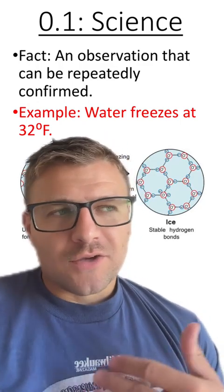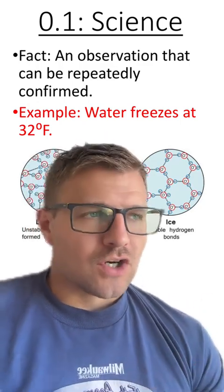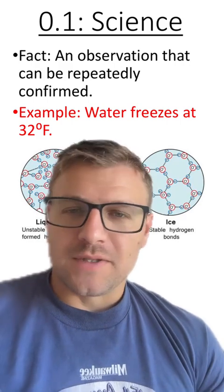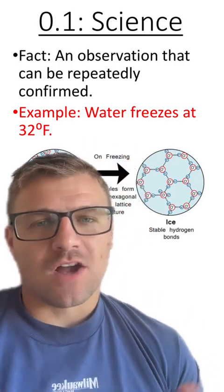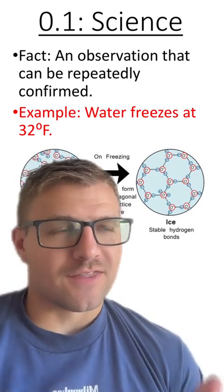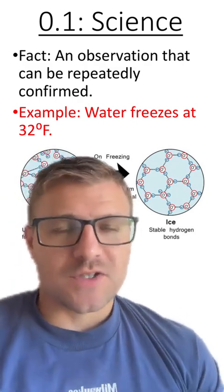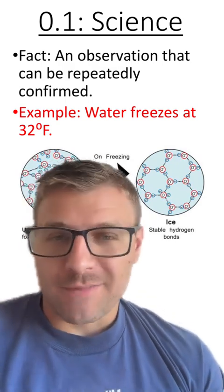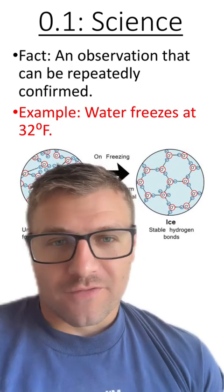During this section, I also like to go over just general terms that we use in biology, one of which is being a fact. A fact is an observation that can be repeatedly confirmed. And an example of this is water freezes at 32 degrees Fahrenheit. We can observe this and go back and observe this time and time again and see that water freezes at this temperature.